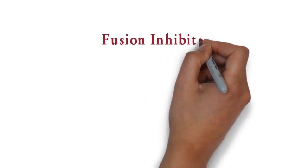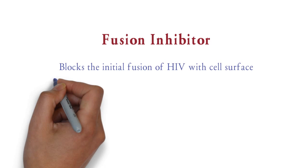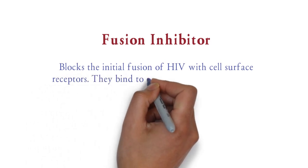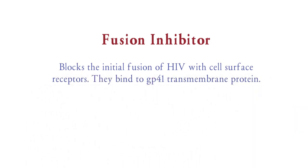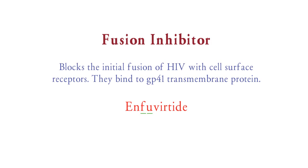Next are fusion inhibitors. As the name suggests, these drugs block the fusion of HIV with cell surface receptors — basically they bind to GP41 membrane protein. Only one drug to remember, which is enfuvirtide. As you can see, enfuvirtide contains 'FU' in the spelling, so a fusion inhibitor can be remembered as the 'FU'-containing drug enfuvirtide.